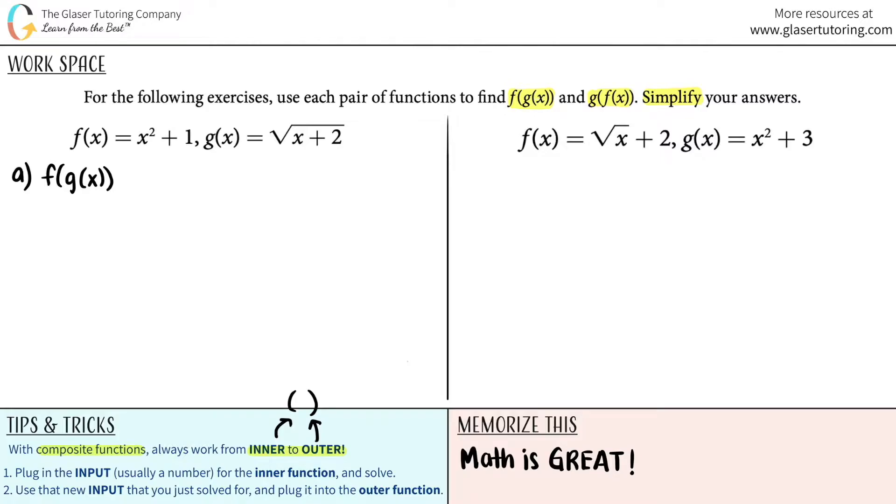So in this case, g of x would be your inner function. It's the innermost for the parentheses. And then you have an f function here, that's your outermost. So we're going to be working with the g of x function first and then move to the outer function. Now, what's the first thing you got to do? Well, you got to plug in the input. It's usually a number for the inner function and just use your algebra to solve. But here, they didn't give us a number.